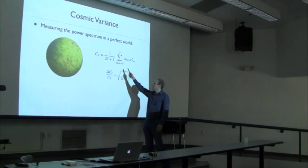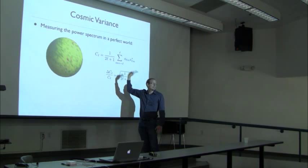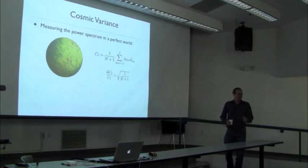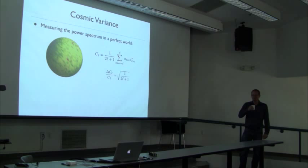Assuming Gaussian statistics and isotropy, C_L is all the information there is — that's a consequence of a Gaussian random field. Of course, when you have a small number you don't use a Gaussian distribution; you use a Poisson distribution.